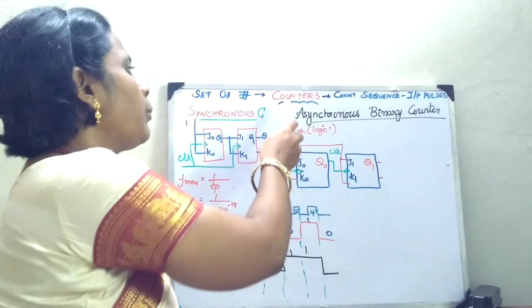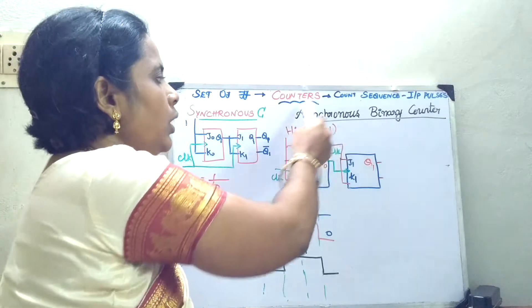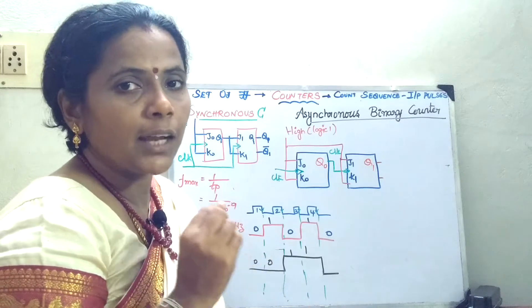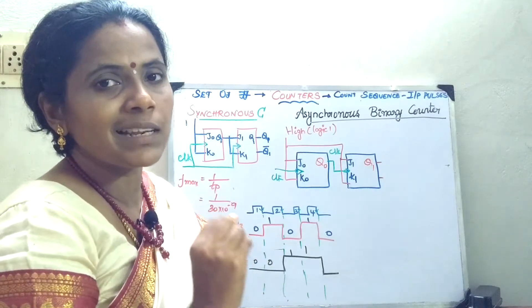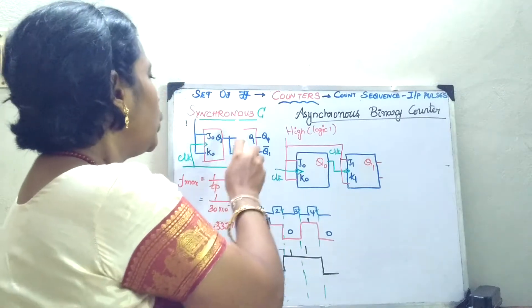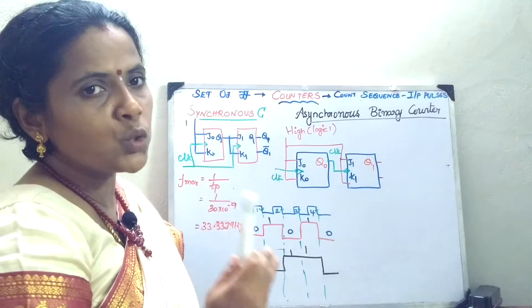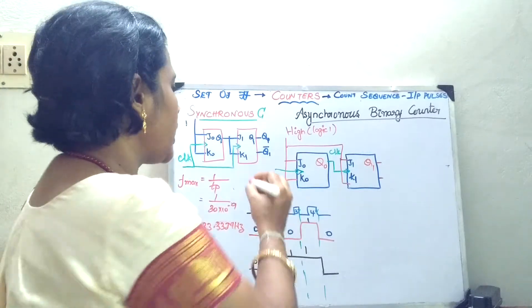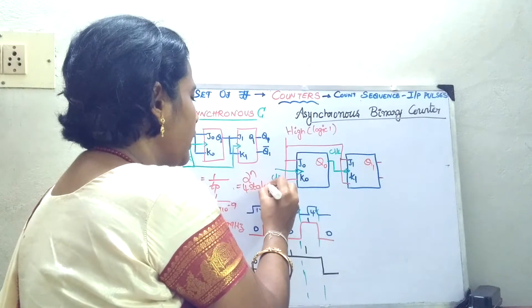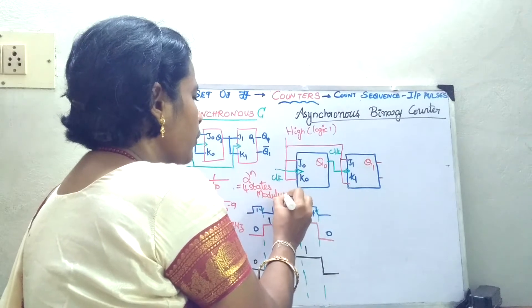These counters are broadly classified into two types: one is your synchronous counter and another is your asynchronous counter. When I say synchronous counter, that means I am going to synchronously give the clock pulse to all the flip-flops. Here I have taken a two-bit synchronous counter, so two flip-flops are used. With two flip-flops, 2 power n gives four states — these states are called the modulus.